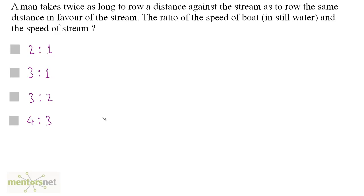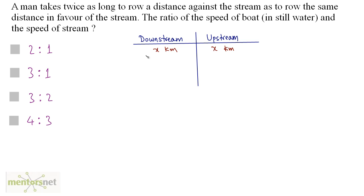A man takes twice as long to row a distance against the stream as to row the same distance in favor of the stream. What is the ratio of the speed of boat in still water and the speed of stream? You actually have two situations here — downstream and upstream. Let the distance travelled be x kilometers and let the time taken to travel downstream be t hours. It is given that the man takes twice as long upstream, so upstream the time taken is 2t hours. Downstream speed is equal to x by t and the upstream speed is equal to x by 2t.